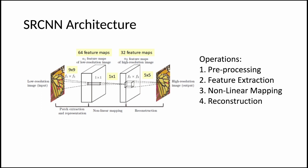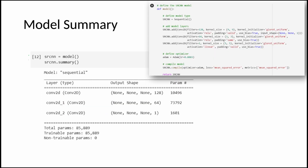feature extraction, non-linear mapping, and then reconstruction of the high-resolution image. The architecture clearly shows a 9x9 convolution followed by 1x1 convolution and then finally a 5x5 convolution. So when we code the model in the implementation section, all we need to do is follow the architecture, thereby adding three convolutional layers to our model.